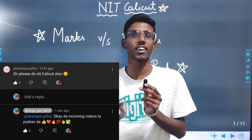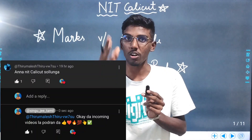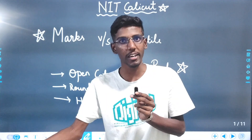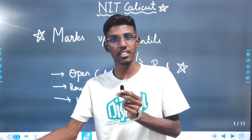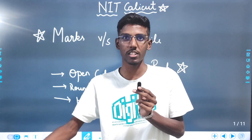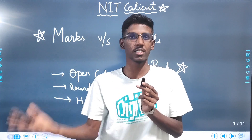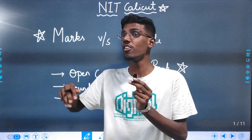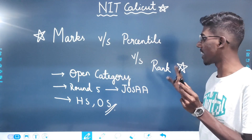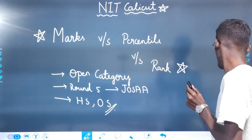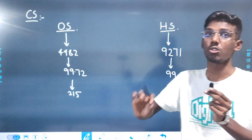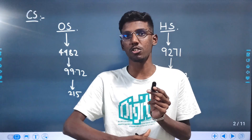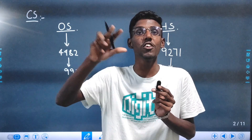We have to check out the NIT Calicut data. For the TRIC Open Category, we also have OBC. In total, CS has 10 courses, plus BR architecture and 4S course, making 11 courses in total.